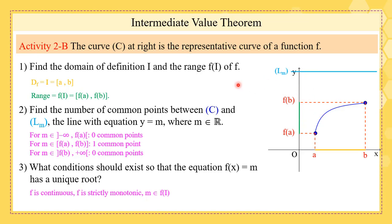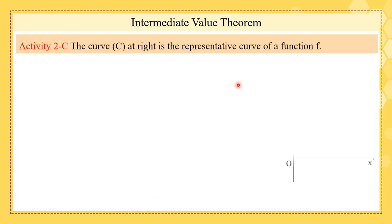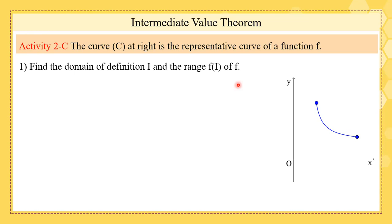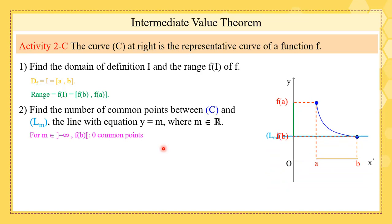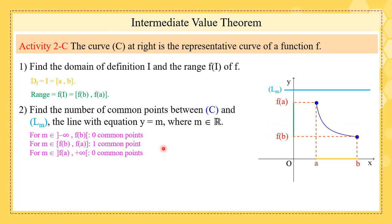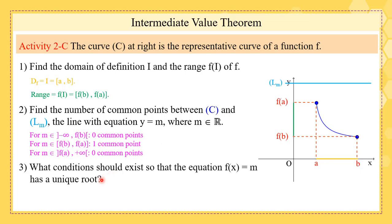Next we have a strictly decreasing curve. The domain is the closed interval [a, b] and the range is [f(b), f(a)] — because the function is strictly decreasing. For the common points with Lm: below f(b) there are none; from f(b) to f(a) there is one common point; from f(a) to plus infinity there are none. The condition for a unique root is the same: f continuous, strictly monotonic, and m belonging to f(I).